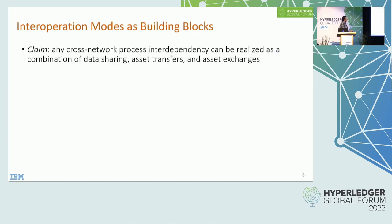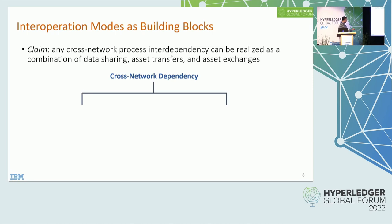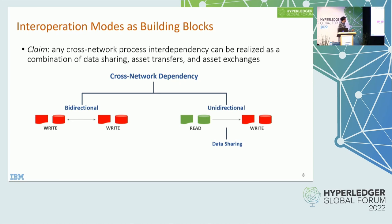Our claim is that any cross-network process interdependency can be realized as a combination of these scenarios. Data sharing, asset exchange, and asset transfer collectively cover almost all the use cases you can imagine when bringing two different blockchain or DLT networks together. From a modeling perspective: unidirectional dependency — where a read in one network triggers a write in another — is the data sharing use case, while bidirectional dependencies that must happen atomically correspond to asset transfer and asset exchange.